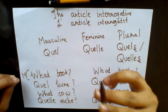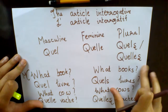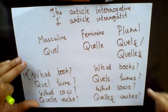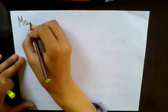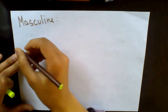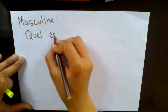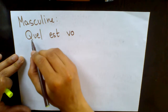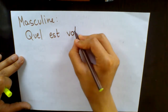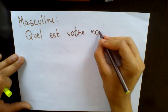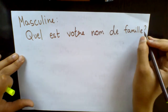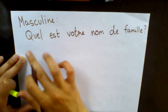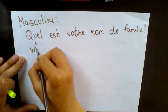For your understanding, I'll take more examples on the masculine and feminine forms. For the plural, I hope you already understood the difference. So taking a masculine example, you have 'quel' — here 'quel est' means 'what is.' For example, 'quel est votre nom de famille' — which means 'what is your surname.'